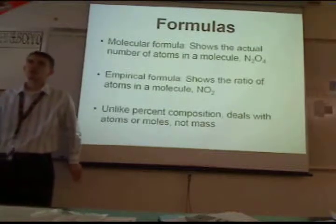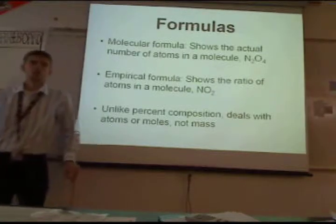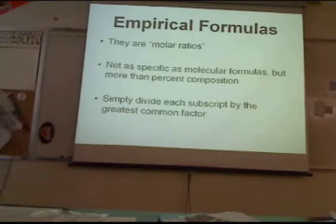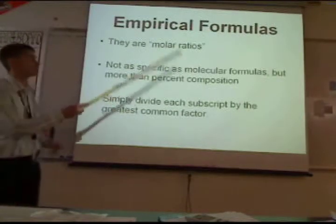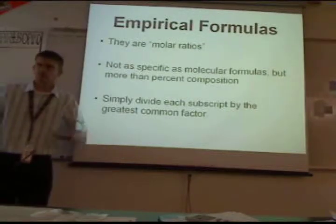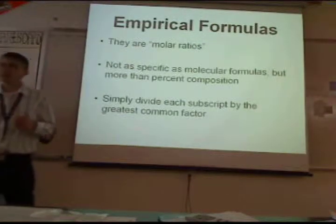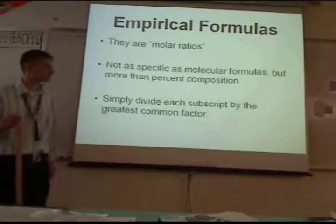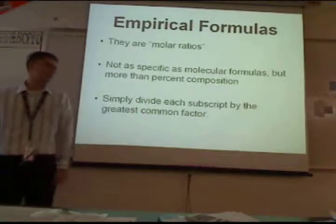Unlike percent compositions, empirical formulas don't have anything to do with mass — it's all about atoms or moles. Empirical formulas are molar ratios; you need to know that term. They're not as specific as molecular formulas, but they're a step better than percent composition. To find them, you simply divide each subscript by the greatest common factor.